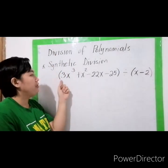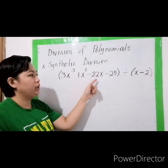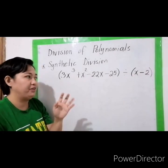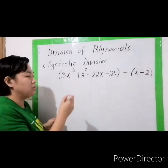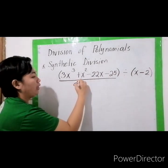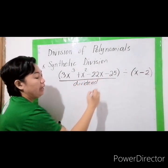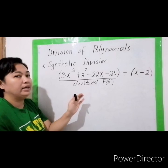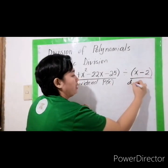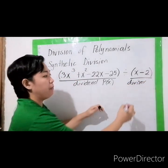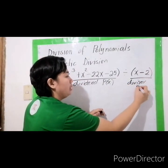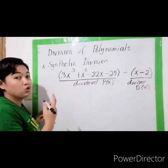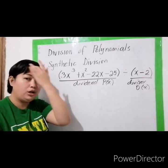For example, you have 3x cubed plus x squared minus 22x minus 25 divided by x minus 2. Before that, let us identify first: where is the dividend? This is your dividend — it is called the dividend and is represented by P of x. This one is what you call the divisor, represented also as P of x. The answer to the division is what you call the quotient, represented by Q of x.